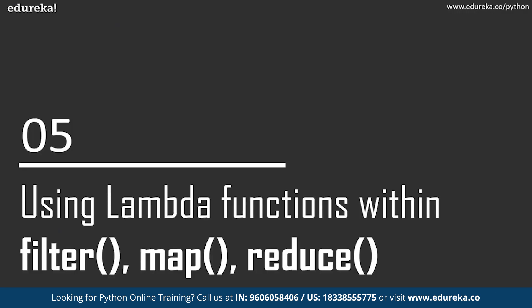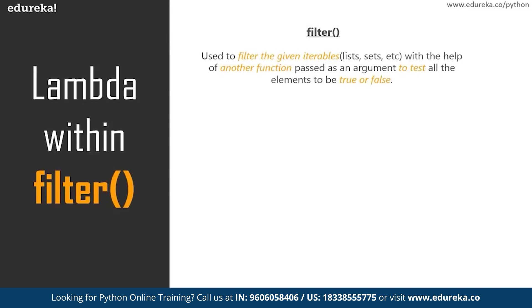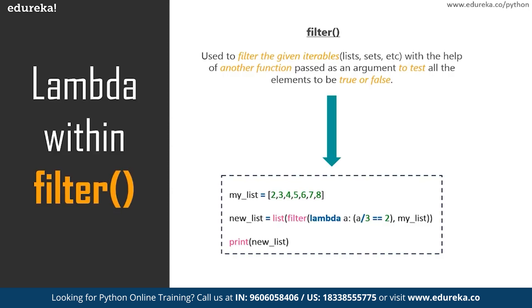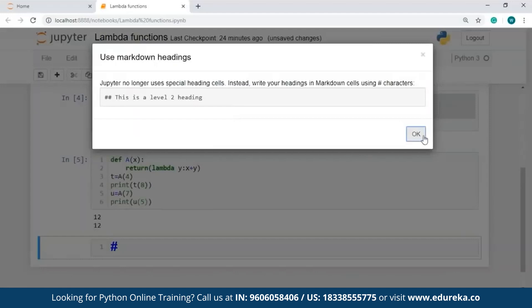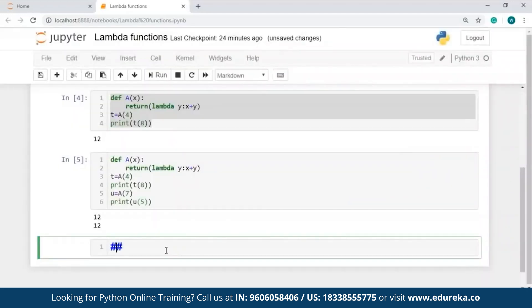Now let's move on towards the next topic, which is using Lambda functions within the filter, map and reduce functions. The filter method is used to filter the given iterables, which can either be lists, sets, etc. This is done with the help of another function which is passed as an argument to test all the elements to be either true or false. After applying the function to the set of iterables, if the value is true, then that value is returned in the output. Let me jump onto my Jupyter notebook and I'll create a new heading.